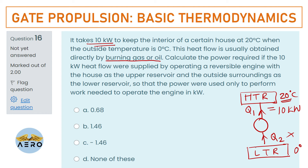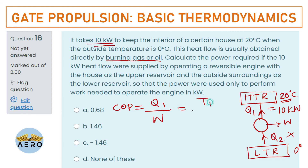We have to find how much work is needed. Recall the COP (coefficient of performance) for a heat pump. The desired effect is heating, so: COP = Q₁/W = T₁/(T₁ − T₂).